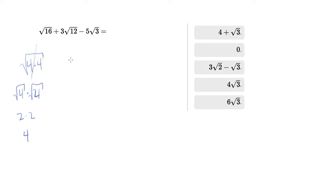12 on the other hand, can be written as 3 times 4, which can be split into root 3 times root 4, which is 2 root 3. And 5 root 3 is just 5 root 3.